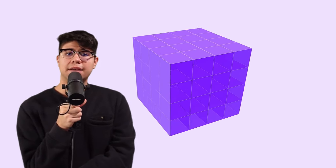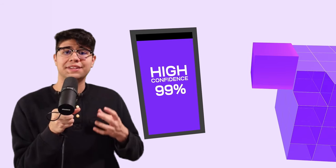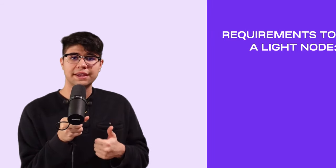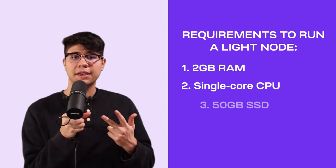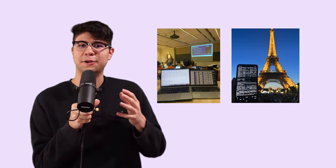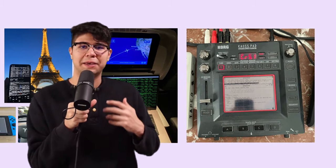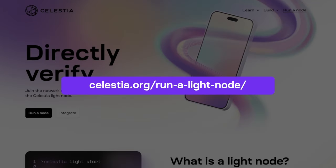The magic of Celestia and data availability sampling is that it gives you high confidence that your data is safe and secure without needing to run an expensive full node. By design, the requirements to run a light node are extremely lightweight — all you need is 2GB of RAM, a single-core CPU, 50GB SSD, and 56KB internet speeds. With these requirements being so ridiculously low, people get very creative in what they can run it on: a cheap PC or laptop, your phone, a Kindle, a Nintendo Switch, a Tesla, on an airplane, or DJ equipment. If you want to run one of these light clients, go to celestia.org/run-a-node to learn more.